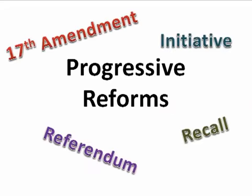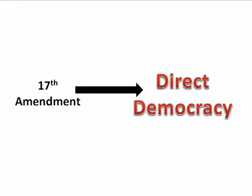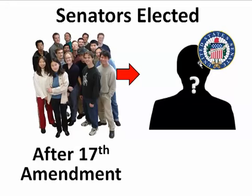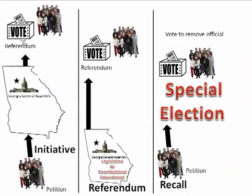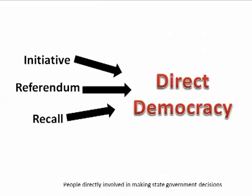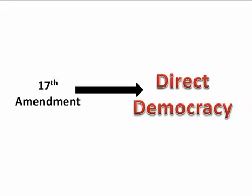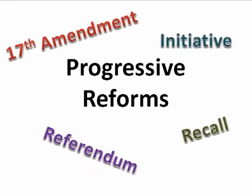So altogether, the progressive reforms that are examples of direct democracy are: the initiative, the referendum, the recall, and the 17th Amendment. The 17th Amendment equals direct democracy because the people directly vote for their two senators. Initiative, referendum, and recall are examples of direct democracy because the people are directly involved — making laws or removing people from office. All four are both direct democracy examples and progressive reforms.